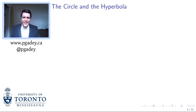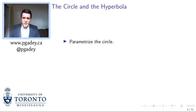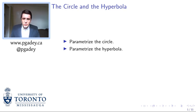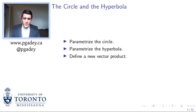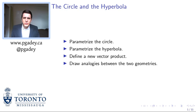Hi everyone. We're going to talk about the circle and the hyperbola today. We're going to parameterize the circle using standard techniques in multivariable calculus, and we're going to parameterize the hyperbola. When we're working with the hyperbola, we're going to introduce a new vector product — a new way of taking two vectors and combining them together that's analogous to the inner product. Once we've got the two geometries, we'll draw analogies between them.